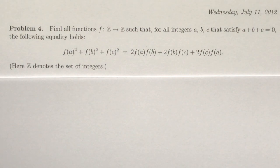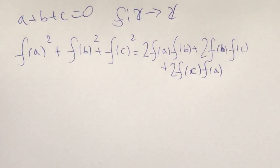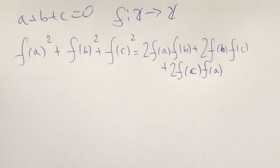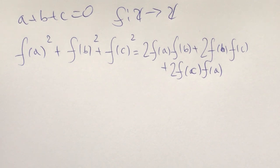Now we're going to go to the solution. So we have this functional equation with the condition that a plus b plus c must equal zero, and the function is from the integers to the integers. Now you can either plug stuff in right away, or take a high-level view and see if you notice something. This time I'll take a high-level view at the beginning, and then start plugging stuff in.